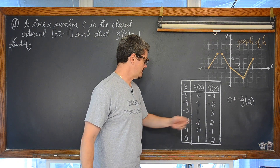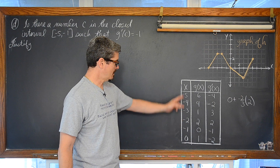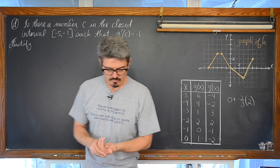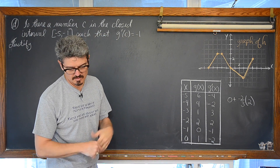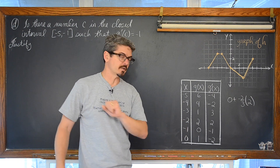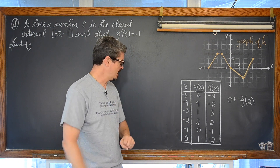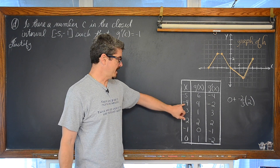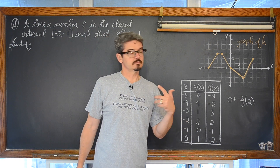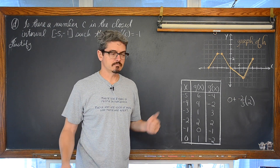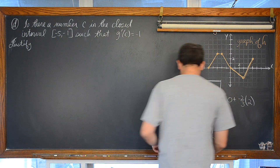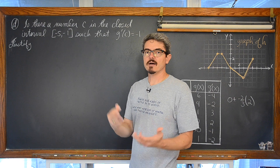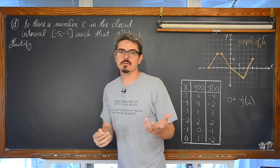Looking at the table, from x = -4 to x = -2: [g(-4) - g(-2)] / (-4 - (-2)) = (4 - 2) / (-4 + 2) = 2 / (-2) = -1. That average rate of change comes out to be -1. So we will start by showing that we calculated, somewhere within this closed interval, an average rate of change equal to -1.